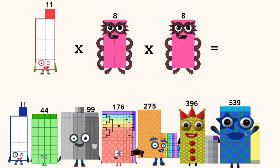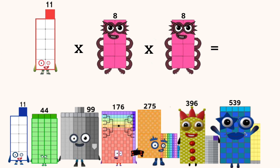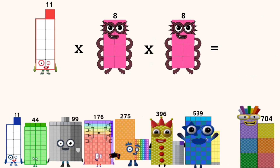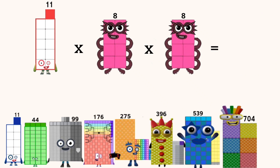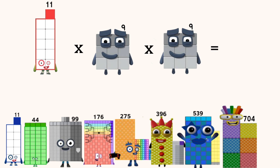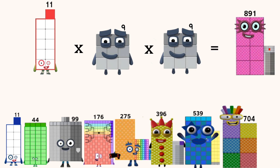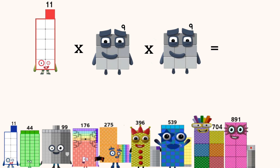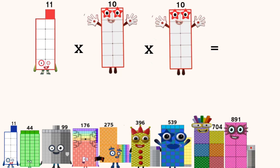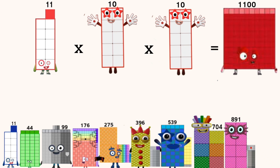Eleven times eight times eight equals seven hundred four. Eleven times nine times nine equals eight hundred ninety-one. Eleven times ten times ten equals eleven hundred.